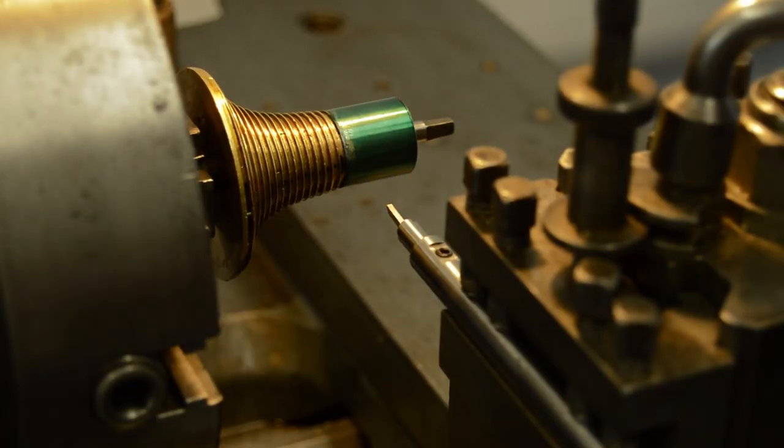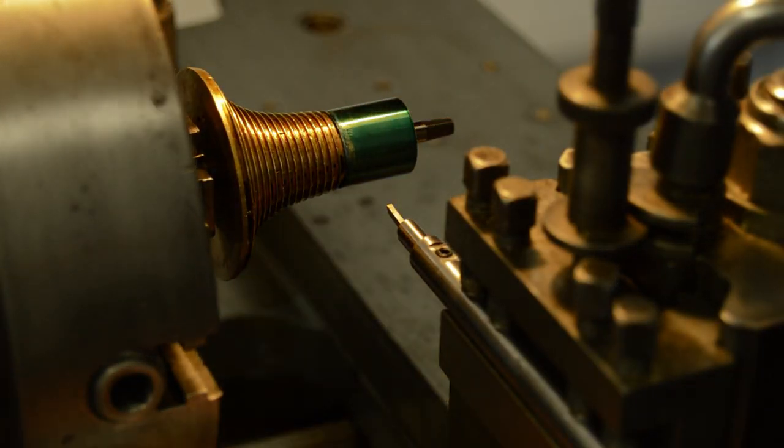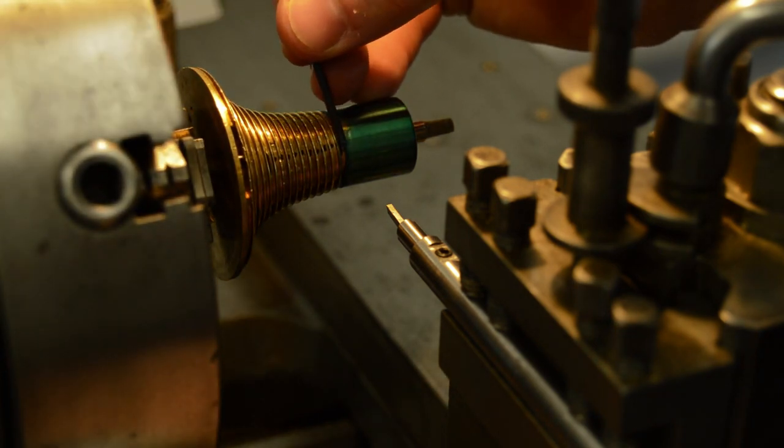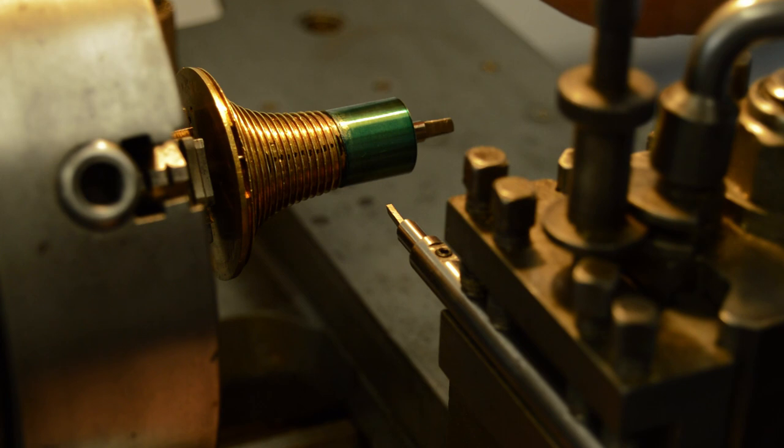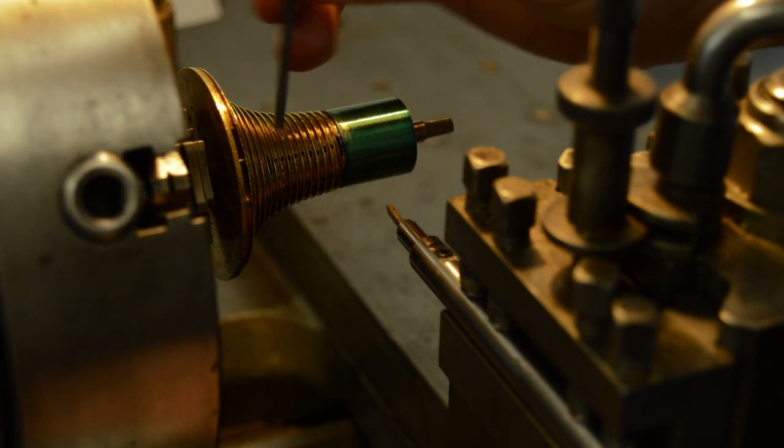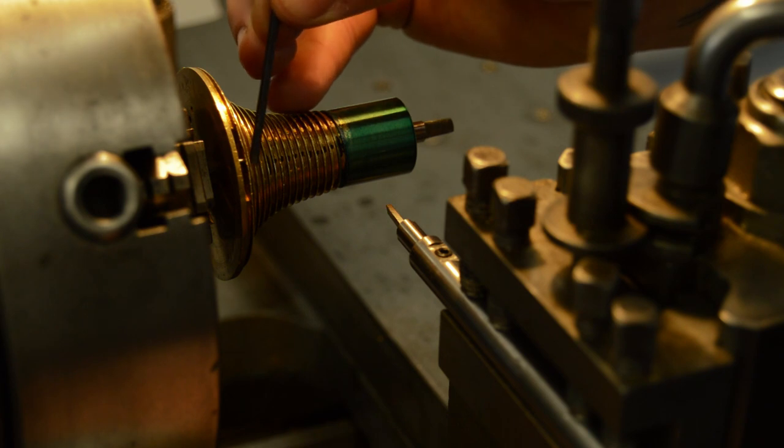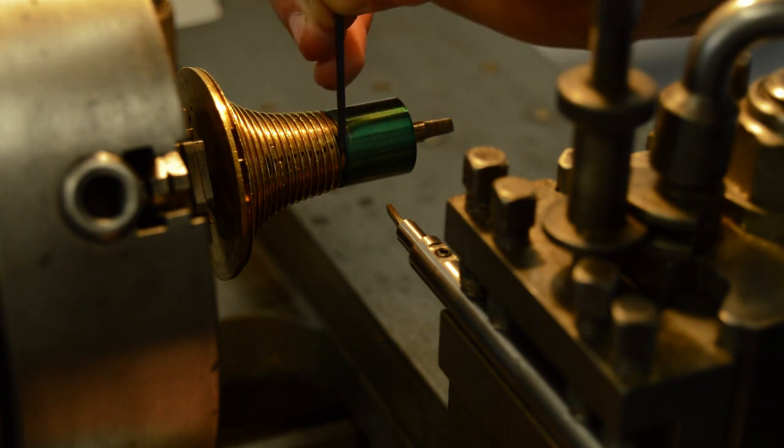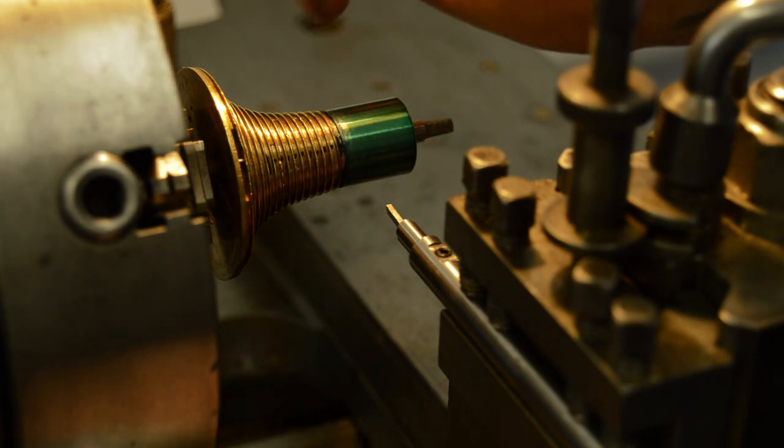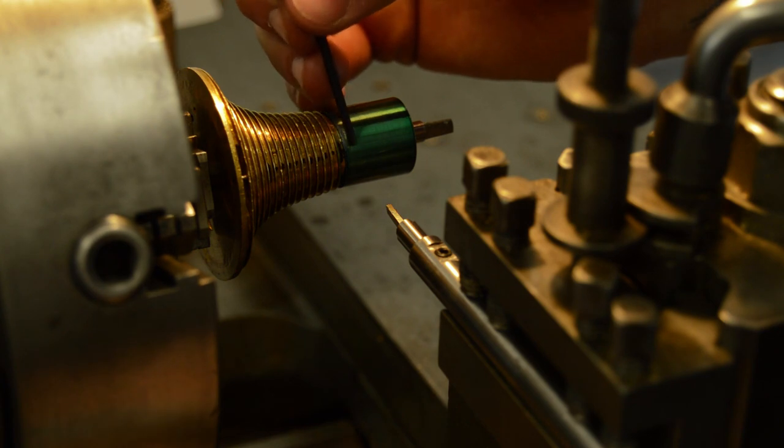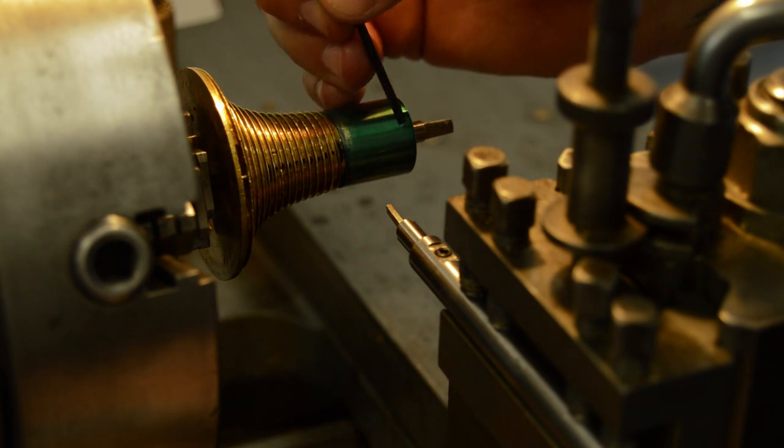Right, so we're getting closer now. From this point here, we want to cut another 7.5 turns up here. This is the starting point, obviously. So 1 full revolution, 2, 3, 4, 5, 15. 15 to that point. So from there, we want to cut another 1, 2, 3, 4, 5, 6, 7.5 revolutions.